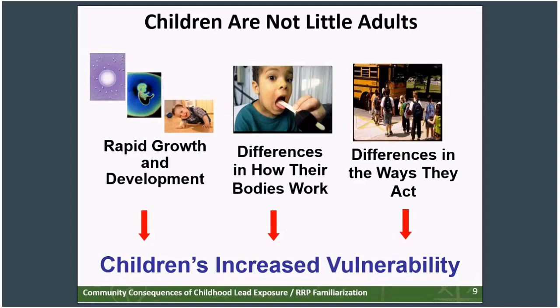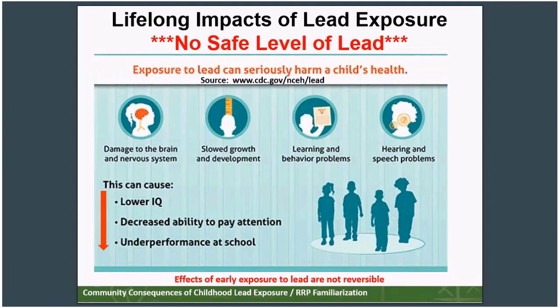In summary, children are not little adults. Because they're not little adults, they tend to have larger exposures to chemicals in their environments, especially their indoor environments, and because they have larger exposures, they have greater risk. Even though average blood lead levels have dropped dramatically over the past 25 years, lead exposure continues to be a major health concern for children. Lead is extremely toxic, especially to young children, and there is no amount of lead that is safe for children. No amount of lead that is safe for children.